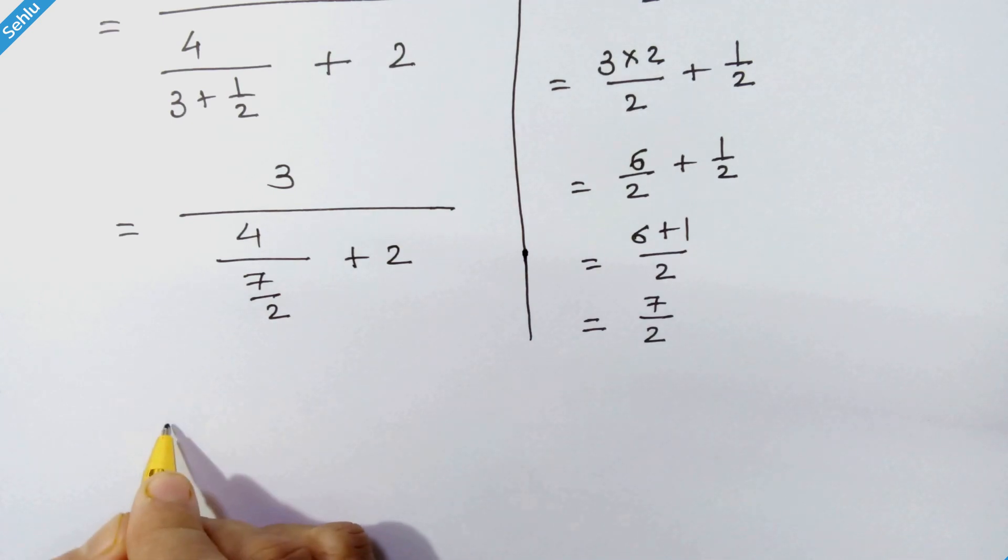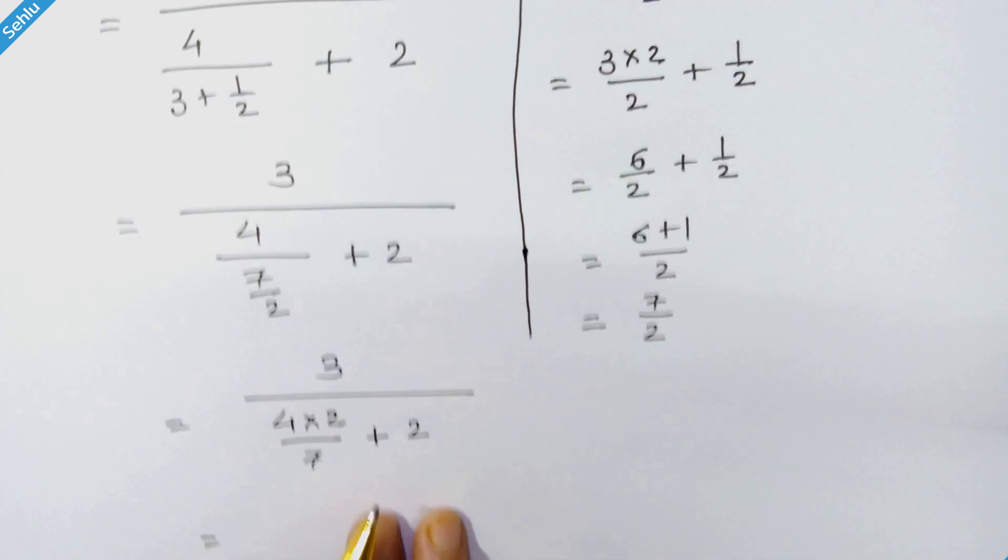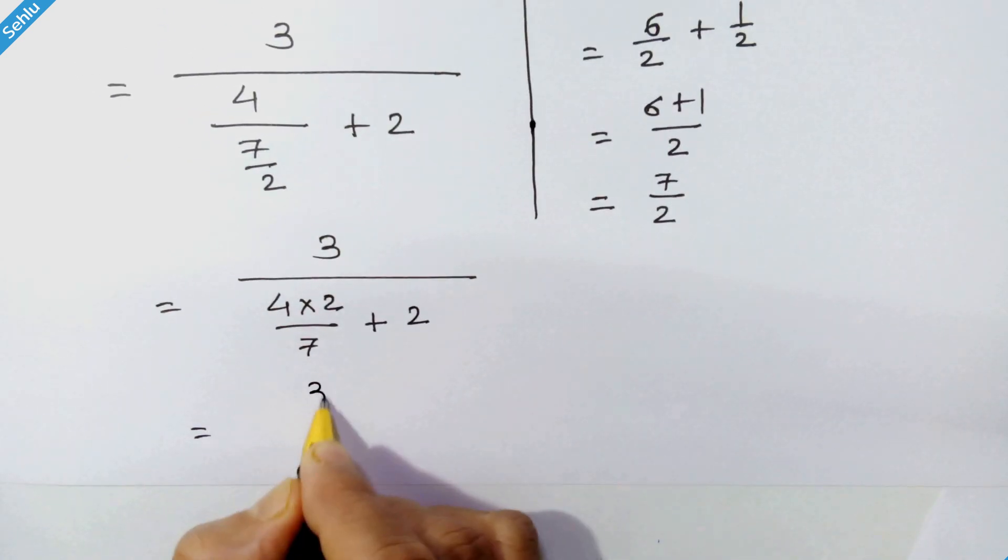So it will be 3 upon 4 times 2 upon 7 plus 2, is equal to 3 upon 8 upon 7 plus 2.